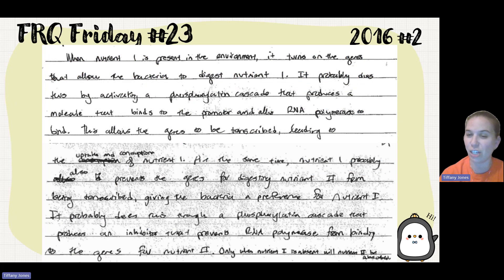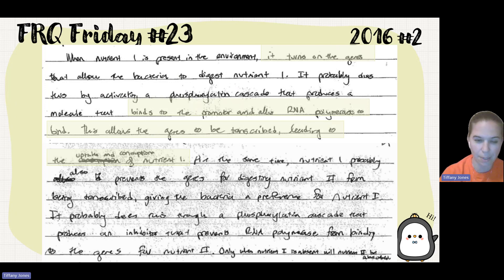A student says when nutrient one is present in the environment, it turns on the genes that allow the bacteria to digest nutrient one. It probably does this by acting through a phosphorylation cascade that produces a molecule that binds to a promoter and allows RNA polymerase to bind. This allows the genes to be transcribed, leading to the uptake and consumption of nutrient one. At the same time, nutrient one probably also prevents the genes for digesting nutrient two from being transcribed, giving the bacteria a preference for nutrient one. It probably does this through a phosphorylation cascade that produces an inhibitor that prevents RNA polymerase from binding to the genes for nutrient two. Only when nutrient one is absent will nutrient two be absorbed.